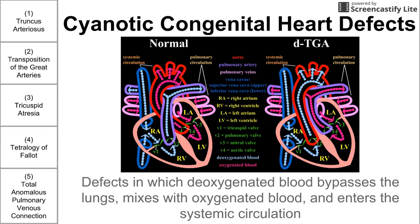This is a brief video on cyanotic congenital heart defects. We're going to be talking about five cyanotic congenital heart defects, and these heart defects are called cyanotic because they result in the mixture of deoxygenated blood with oxygenated blood, and then pouring of that mixed blood into the systemic circulation. These congenital heart defects can cause cyanosis in newborns, in infants, and even in older patients.